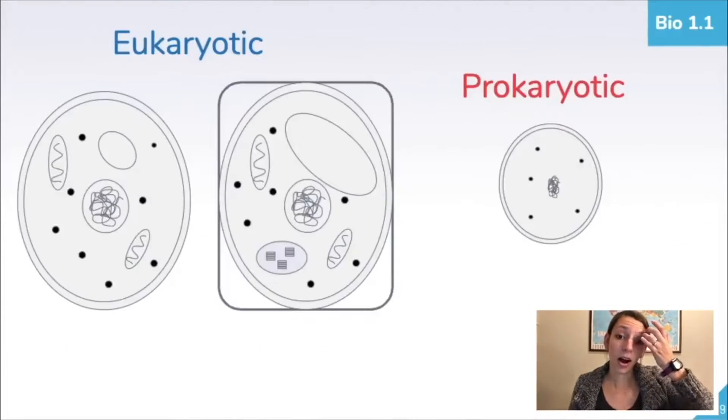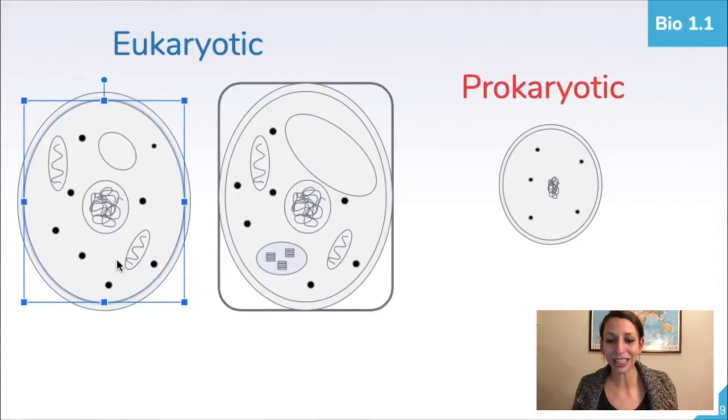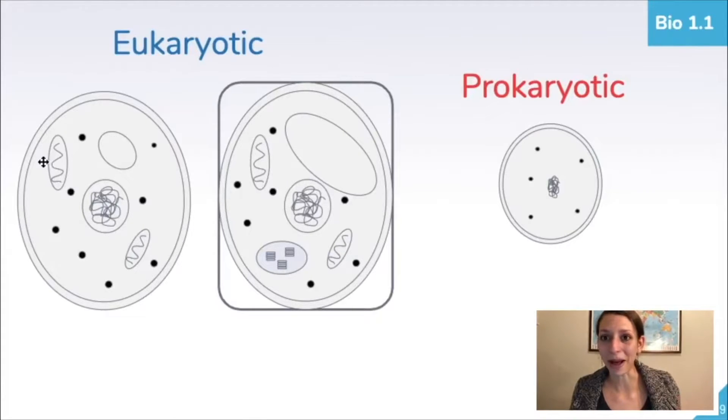If we look back at our plant and animal cells, these are both eukaryotic organisms, meaning they have a true nucleus, or they have a nucleus, and other membrane-bound organelles, so organelles like the mitochondria, organelles like vacuoles, and these are generally larger and more complex.